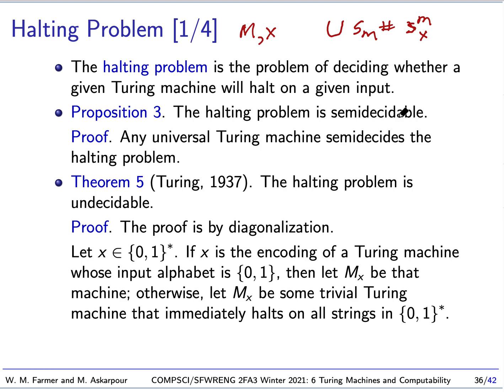It will answer the question yes if M halts on X, but it won't necessarily answer the machine otherwise. So the halting problem we can see is semi-decidable. We know this by using a Turing machine. But it turns out, not only is it semi-decidable, it is undecidable. And this is what Turing showed in 1937, and its proof is by diagonalization. So we're going to give the proof right now. So let's say we take any string of zeros and ones, any finite strings of zeros and ones. Now, remember we have this scheme for encoding Turing machines.